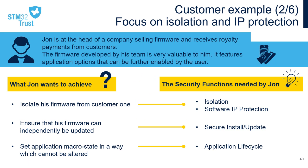In our second example, John is at the head of a company selling firmware and receives royalty payments from its customers. The firmware developed by his team is very valuable, and it features application options that can be further enabled by the user. To secure his business, John needs to isolate his firmware from Customer 1 and to protect his firmware IP.